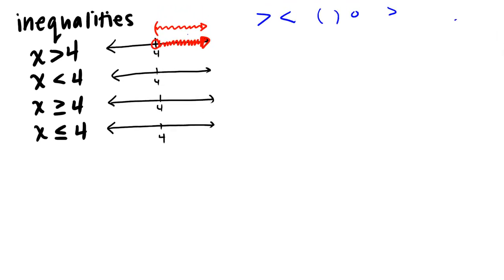If we have a greater than or equal to, or less than or equal to, then we'll use either a hard bracket or a filled circle. This is very similar to what we dealt with for domains and ranges. To finish these up: less than four uses a parenthesis or open circle; greater than or equal to four uses a bracket or closed circle. Either notation is acceptable.